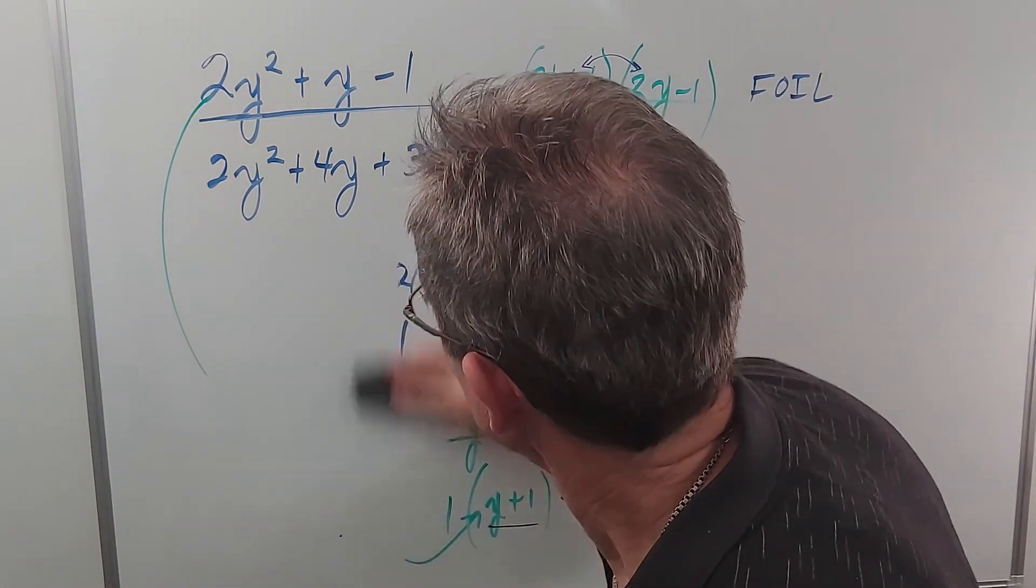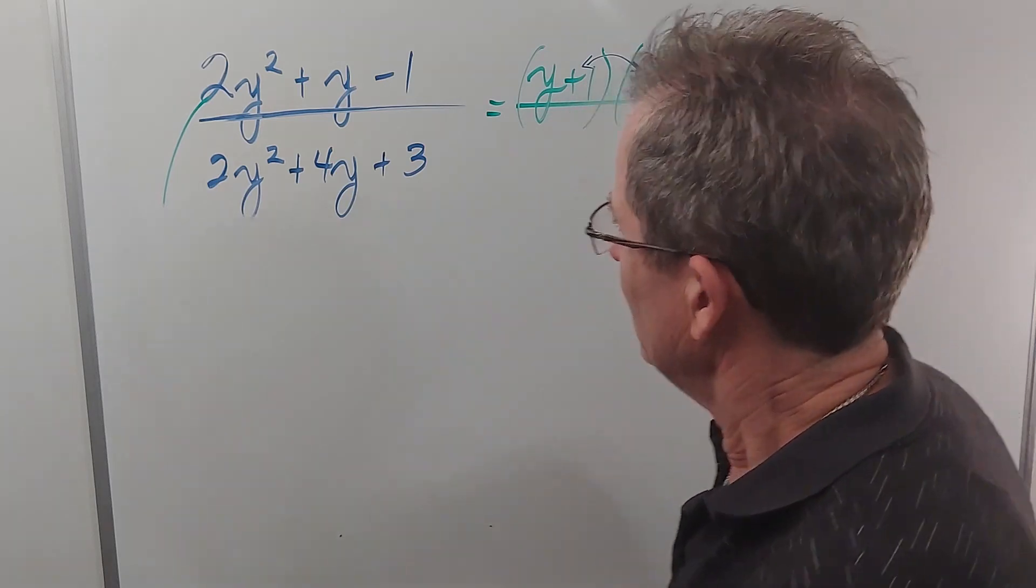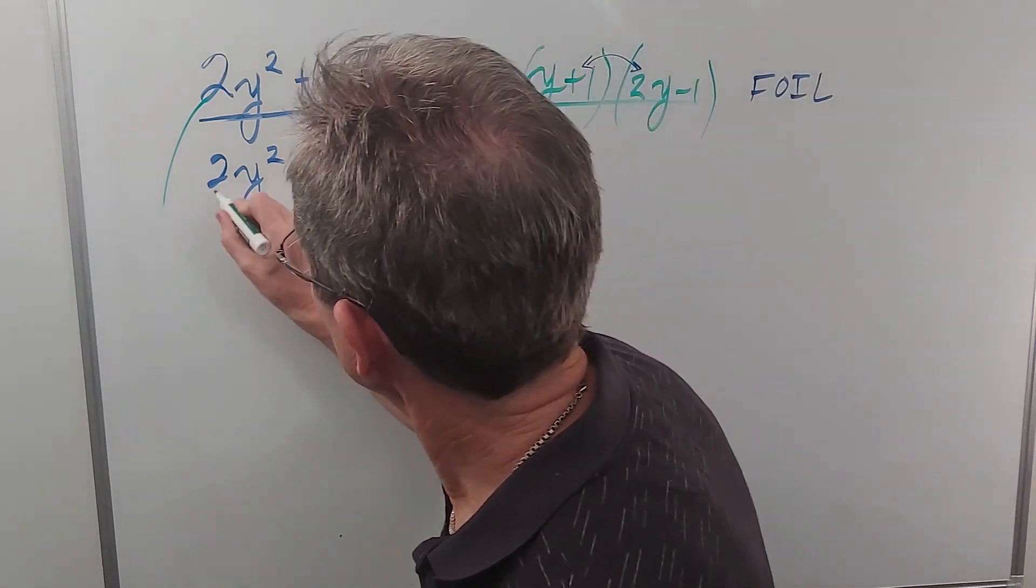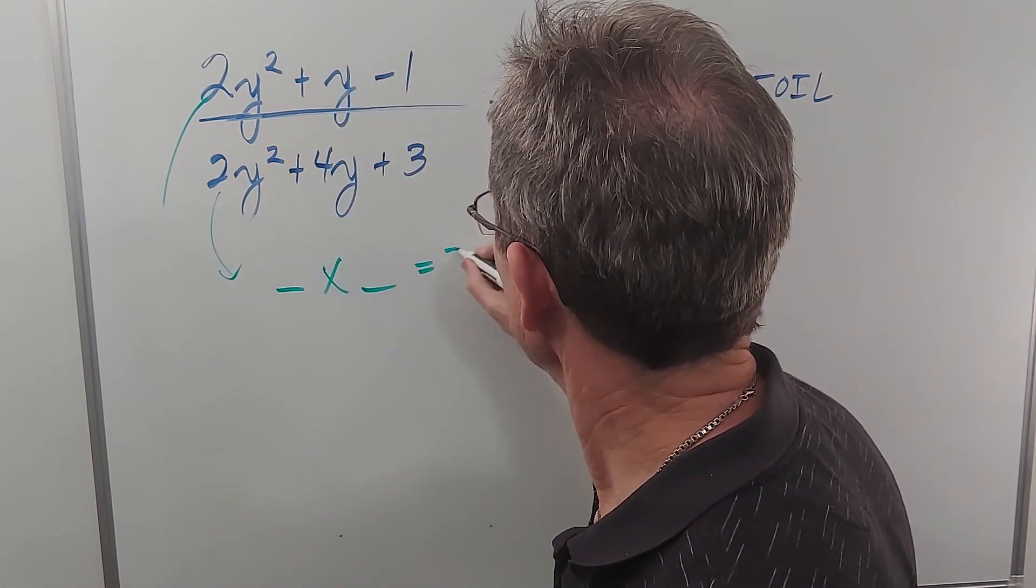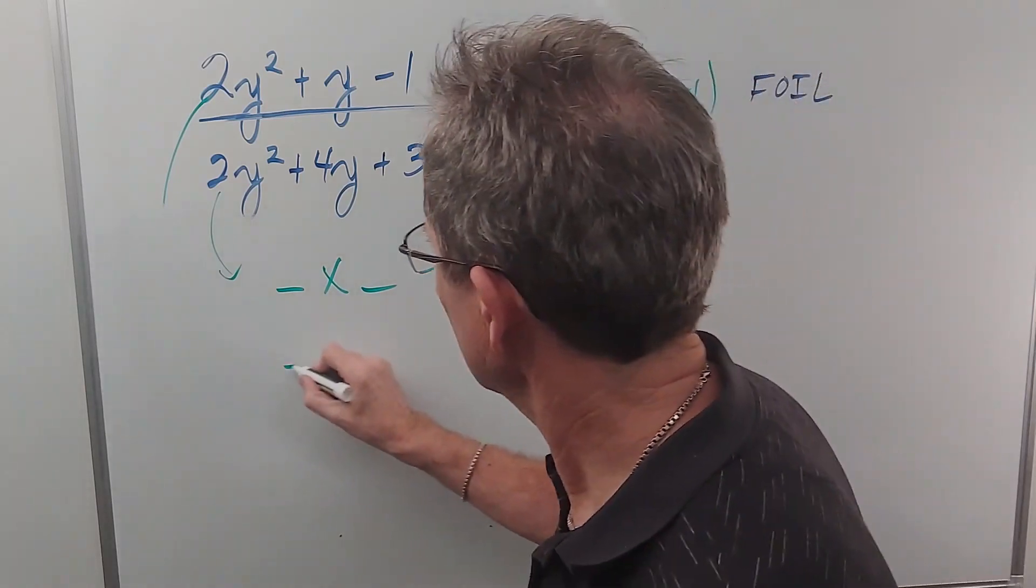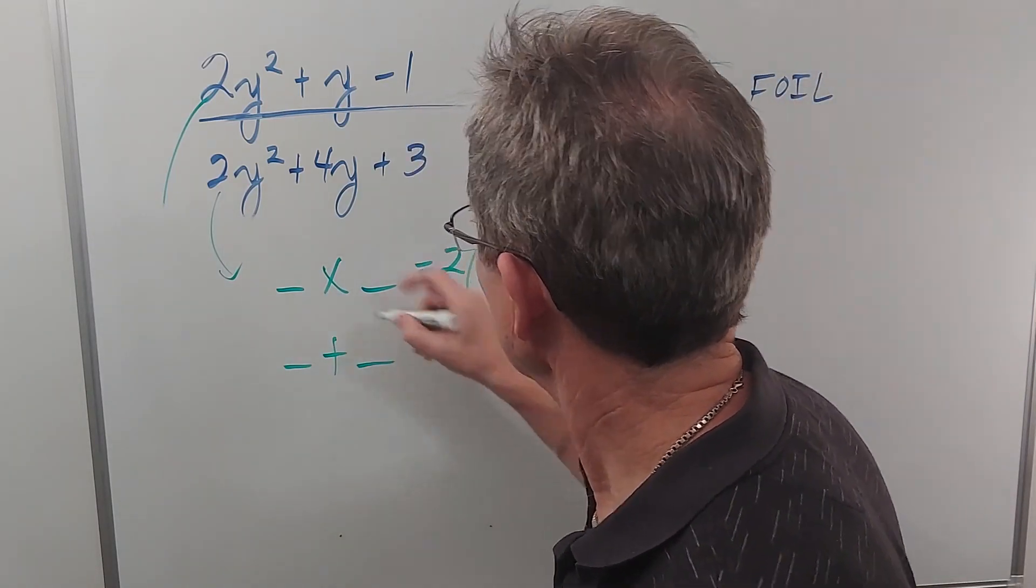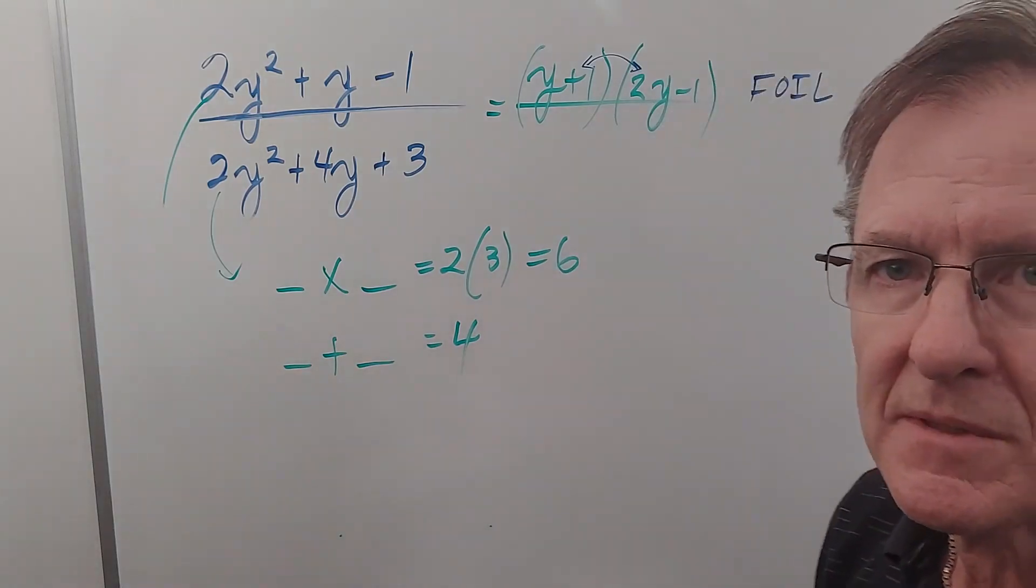Now if you want to do the same thing for the second one, we have to find two numbers that multiply to give 2 times 3, which is 6. And the same two numbers have to add up to 4. Can you think of two numbers that work?